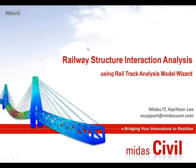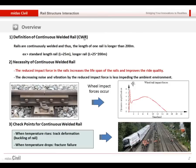Today our topic is rail structure interaction analysis. The main issue for rail structure interaction came from the continuously welded rail. In order to reduce the impact force at rail connections, increase the life cycle of the rail, and ensure smooth running, we prefer to use continuously welded rail, which may be longer than 200 meters.